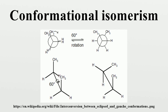Conformational isomers are thus distinct from the other classes of stereoisomers where interconversion necessarily involves breaking and reforming of chemical bonds. For example, L and D and R and S configurations of organic molecules have different handedness and optical activities, and can only be interconverted by breaking one or more bonds connected to the chiral atom and reforming a similar bond in a different direction or spatial orientation. The study of the energetics between different rotamers is referred to as conformational analysis.